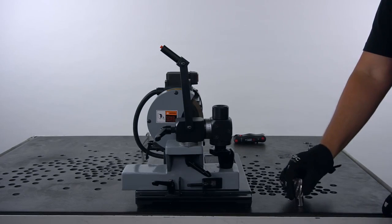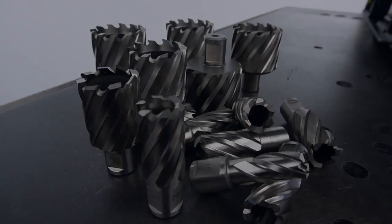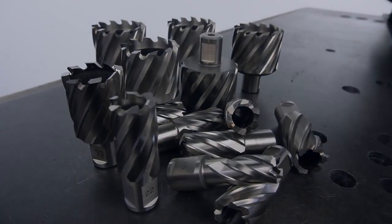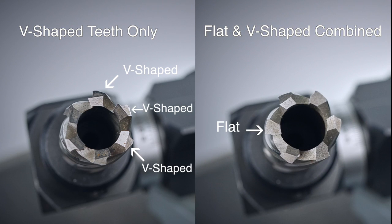Before we place our cutter in, let's take a closer look at the geometry of cutter teeth and their characteristics. Angular cutters come in different variations. Some cutters have V-shaped teeth only, others have flat and V-shaped teeth combined.